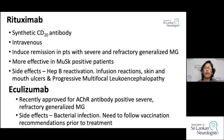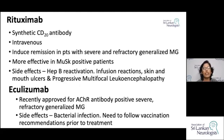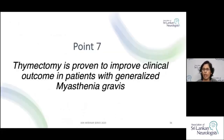For refractory disease, two monoclonal antibodies are recommended: rituximab and eculizumab. Both can induce remission in severe and refractory generalized myasthenia gravis. They share similar side effects, including hepatitis B reactivation, infections, and progressive multifocal leukoencephalopathy. Rituximab is more effective in MuSK-positive patients, whereas eculizumab is recommended for acetylcholine receptor antibody-positive patients.